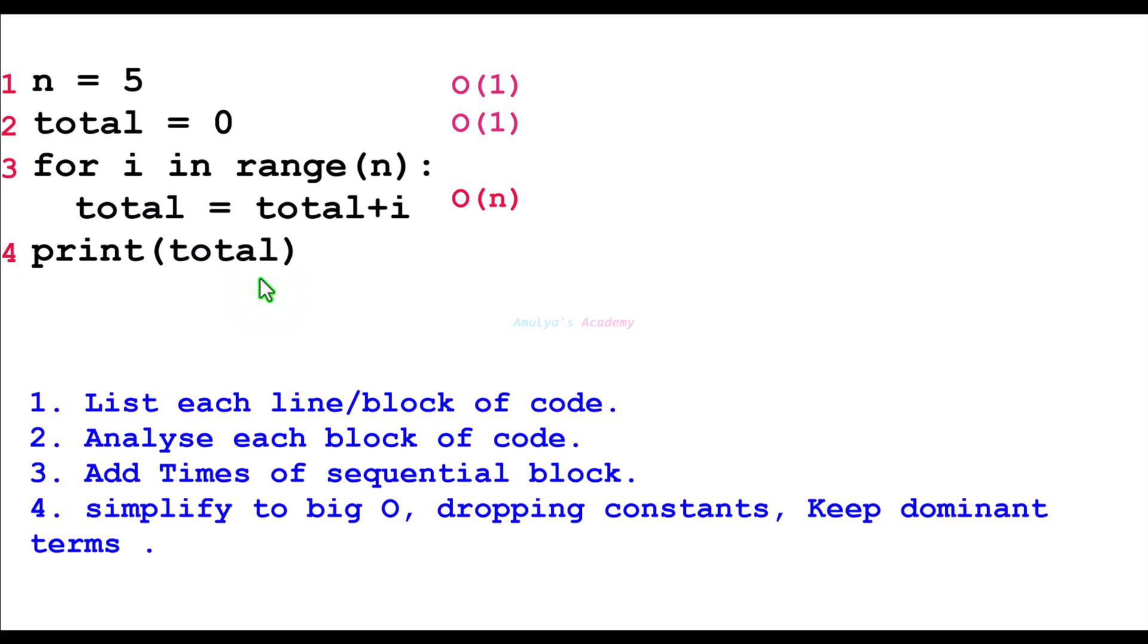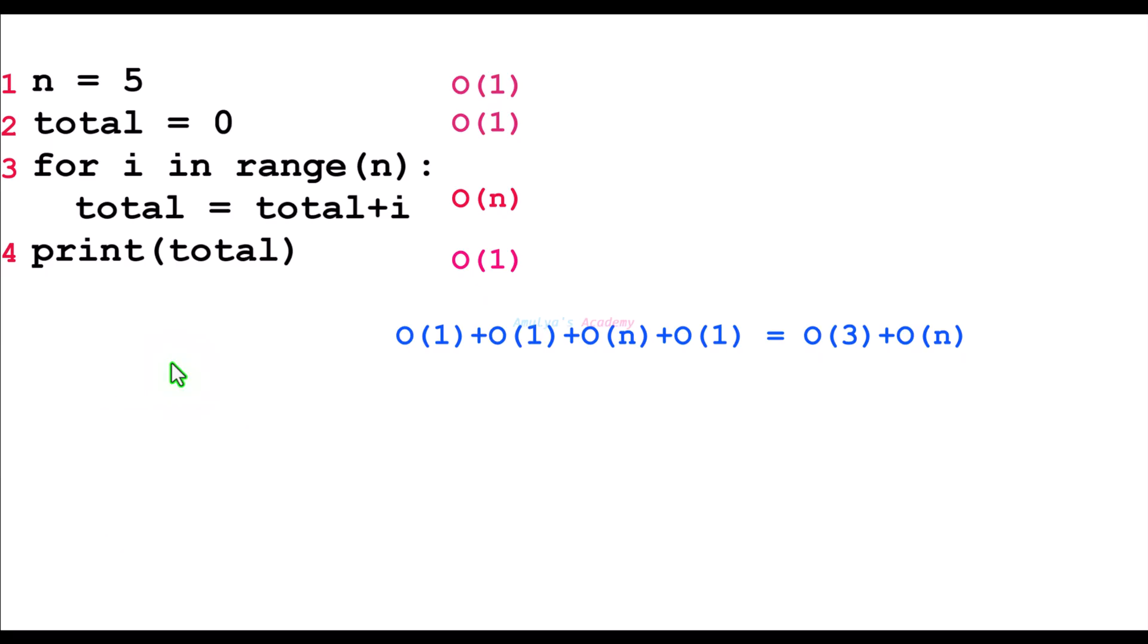Next, we have print total. It is a simple operation. Here we are printing the value of the total variable, so it takes constant time, Big O of 1. Next, we need to add times of sequential blocks. Here we can add like this. Then we can ignore constant terms as well as lower order terms. We will keep the dominant term. So here we will get Big O of n. This is the time complexity of this program.